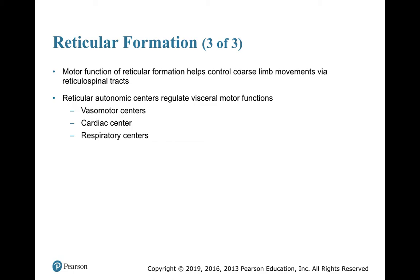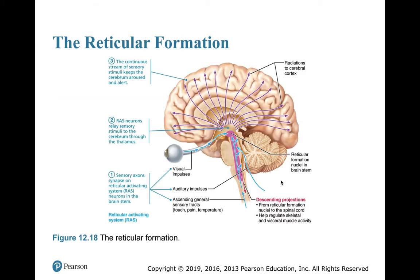There are motor functions of the reticular formation that help control coarse limb movements, working through reticulospinal tracts. There are reticular autonomic centers that regulate some visceral motor functions, including vasomotor centers, cardiac centers, and the respiratory center. Here is a broad drawing of the reticular formation projecting throughout the brain to control numerous things.